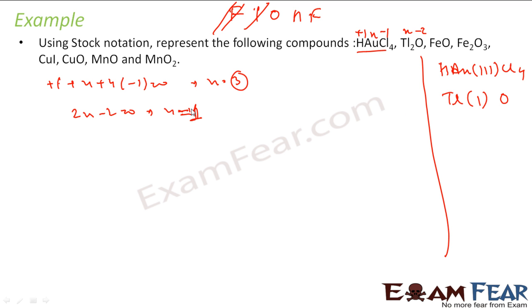Same thing, FeO. Let's apply the formula. O will make it minus two, Fe will make it X. This becomes X minus two equals zero. You solve this, you get X equals two. So Fe(II)O.